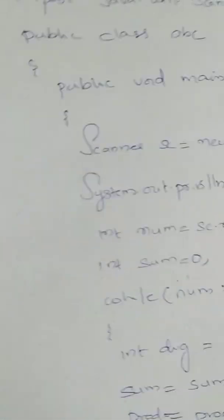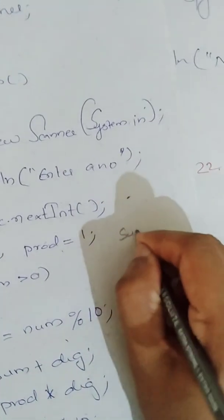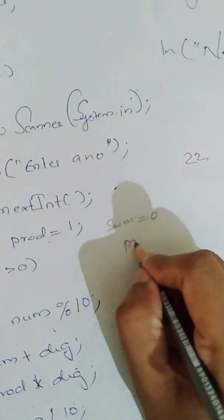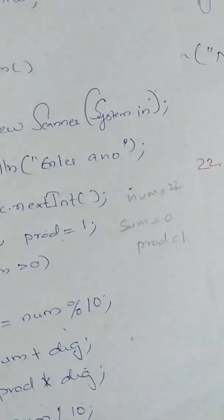What happens here means sum will be 0, product will be 1. So your sum is equal to 0, product is equal to 1, num is equal to 22.